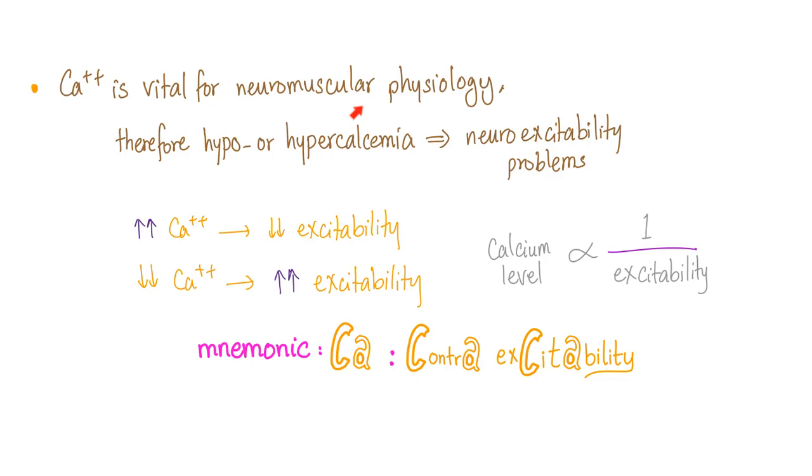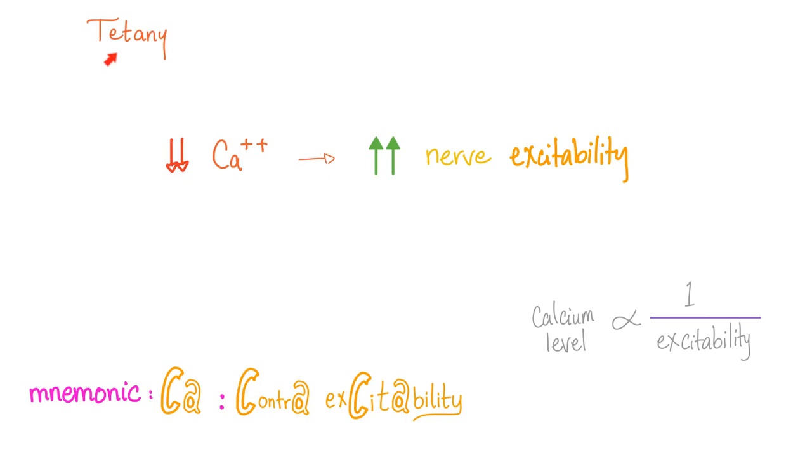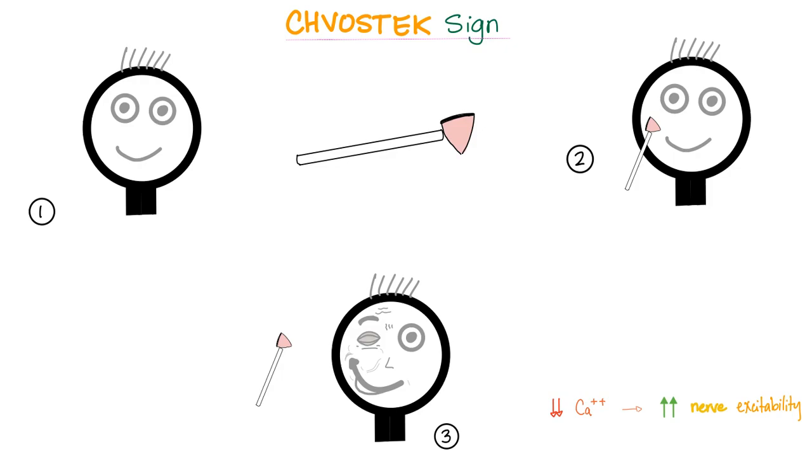Calcium, especially the charged ionized calcium, is vital for neuromuscular physiology. Therefore, hypo or hypercalcemia will lead to neuro excitability problems. High calcium will lead to decreased excitability. And low calcium will lead to increased excitability. So calcium is inversely proportional with excitability. Calcium is contra-excitability. So what is tetany? Tetany is not to be confused with tetanus. Both of them have contractions, but they are not the same. Hypocalcemia will lead to increased nerve excitability because calcium is contra-excitability. And this is the story behind Chvostek's sign and Trousseau sign.